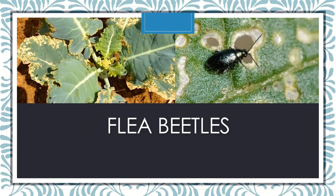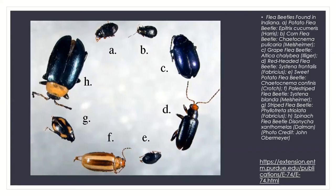With flea beetles, there are quite a few different varieties but they tend to look similar and do the same damage. They really prefer cool crops and tend to come in two flushes — one in spring and one in late summer. I feel they're worst before canola crops come up and really bad after canola crops start to be harvested. There are some really great integrated pest management practices that can help maintain, manage, and even prevent these guys.